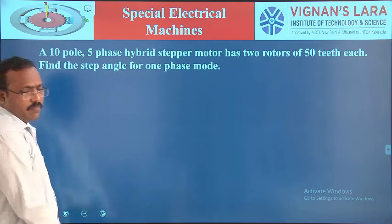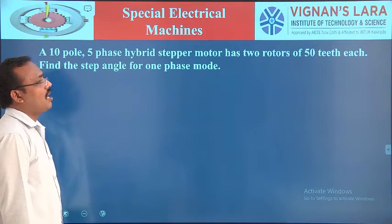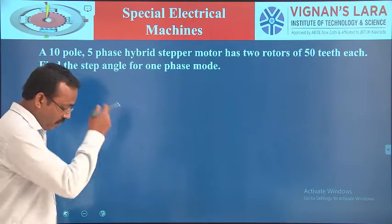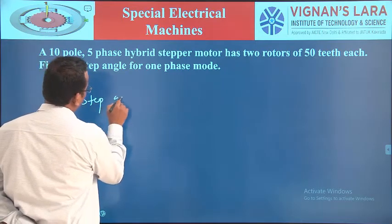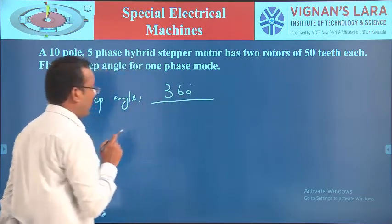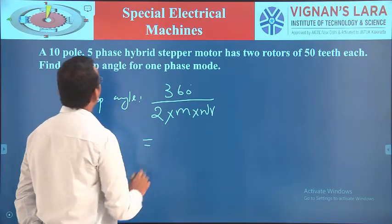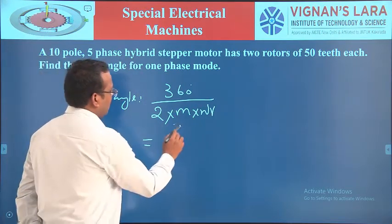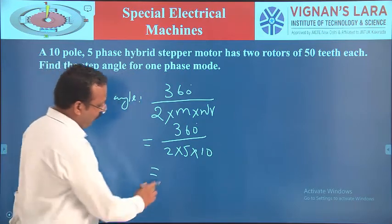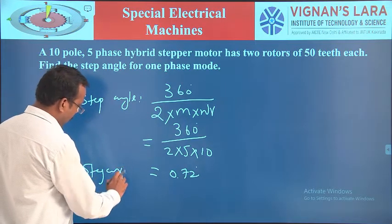The next problem: a 10-pole, 5-phase hybrid stepper motor has 2 rotors of 50 teeth each. Find the step angle for one-phase-on excitation. For a hybrid stepper motor, step angle = 360 / (2 × m × Nr) = 360 / (2 × 5 × 50) = 0.72 degrees.